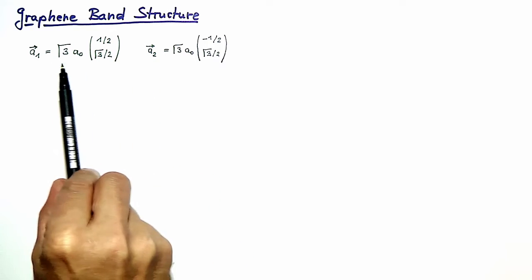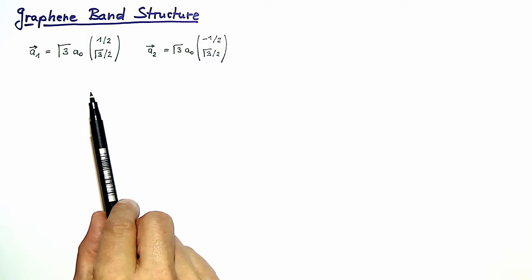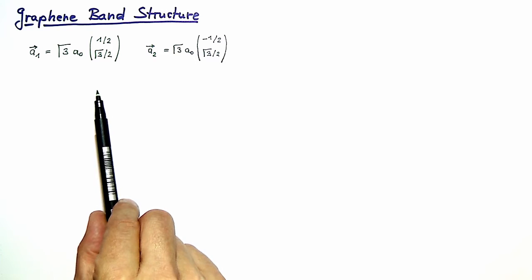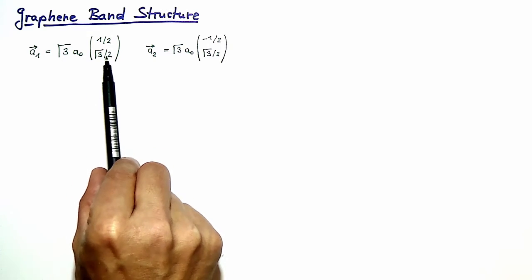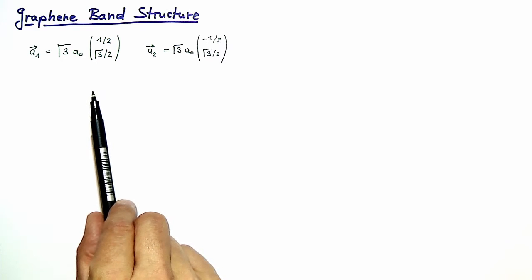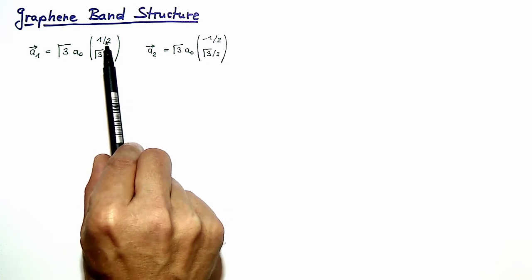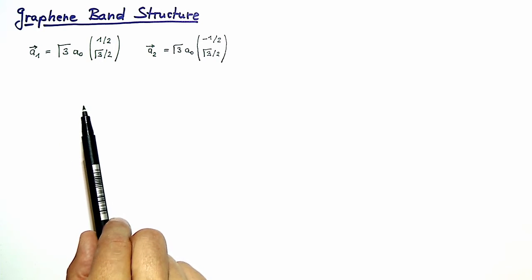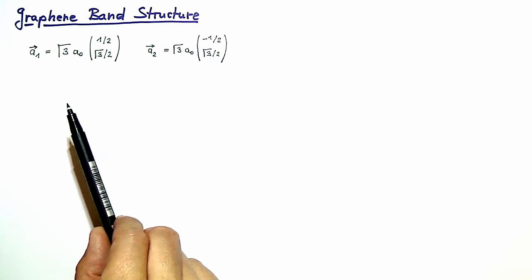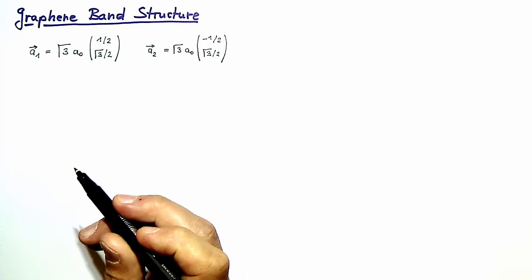These vectors are two-dimensional because graphene is a two-dimensional lattice. So also the reciprocal lattice will be a two-dimensional lattice spanned by two basis vectors which have two components. As a consequence we have four unknown components of two reciprocal lattice vectors, so we need to find four equations that the reciprocal lattice vectors need to fulfill.